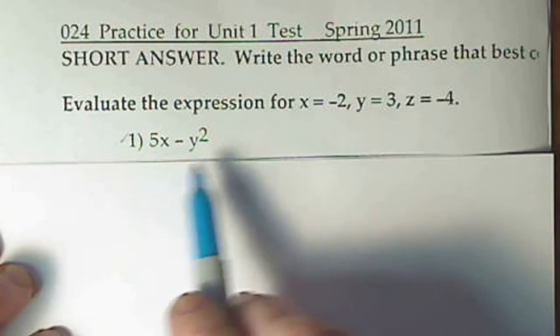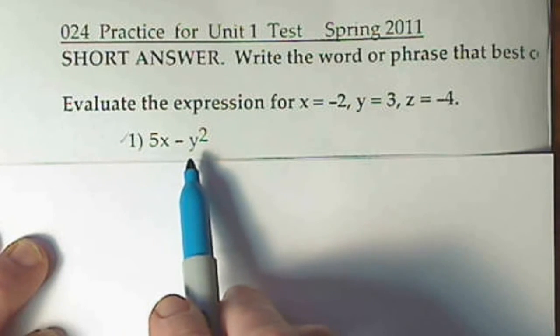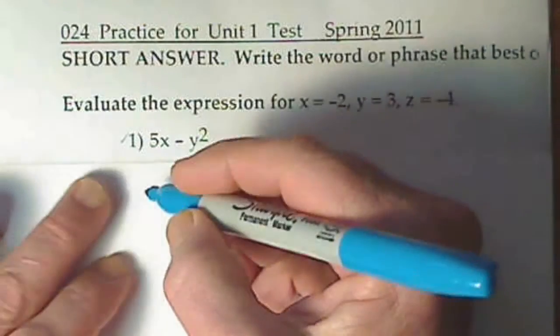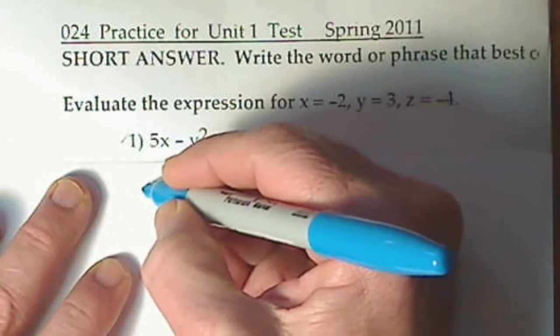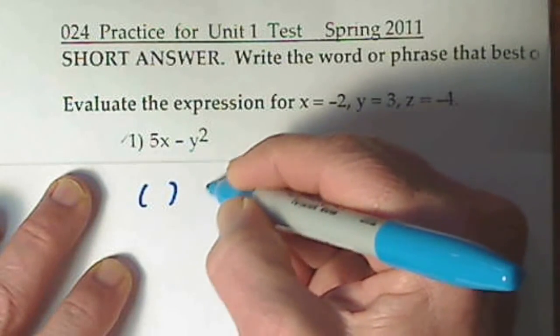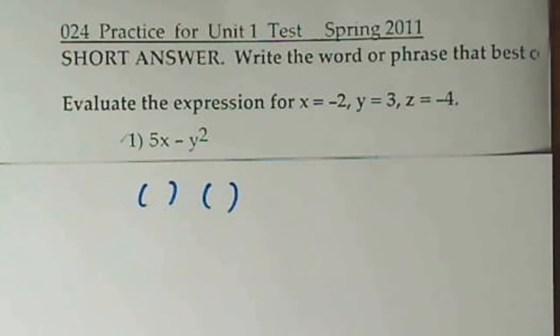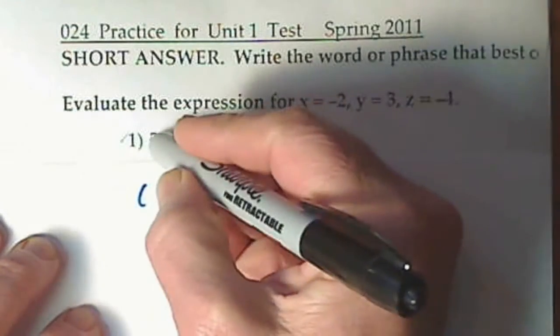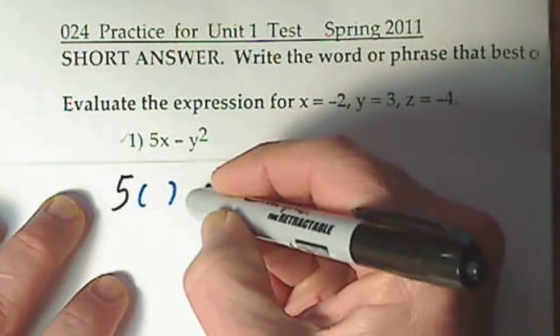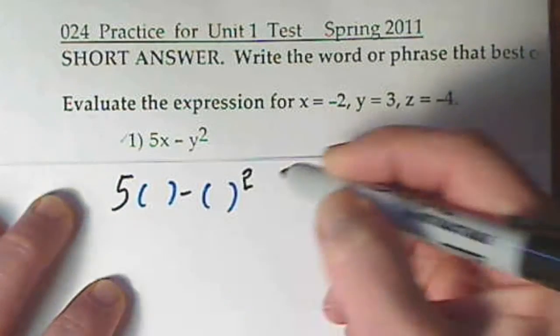Whenever you're asked to evaluate an expression, it's a good idea to put parentheses where the variables are and then you can plug in the corresponding values. So right where the x is, I'll put a set of parentheses, where that y is, there's another set of parentheses, and then I'll just bring down everything else. So here's the 5, this minus sign is right here, and then squared is sitting up there.